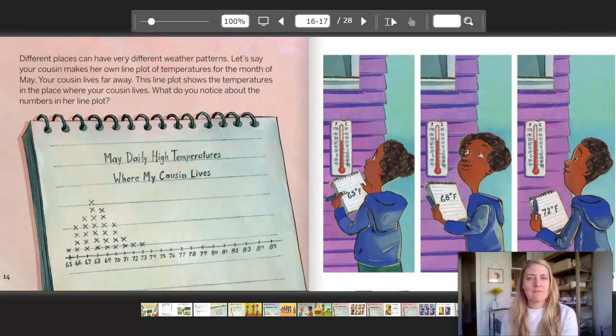Different places can have very different weather patterns. Let's say your cousin makes her own line plot of temperatures for the month of May. Your cousin lives far away. This line plot shows the temperatures in the place where your cousin lives. What do you notice about the numbers in her line plot? The title says May Daily High Temperatures Where My Cousin Lives, and already look at those numbers. Look where all the X's are.